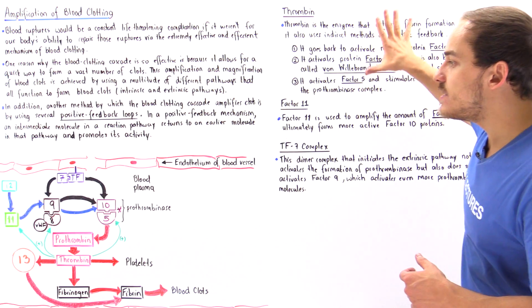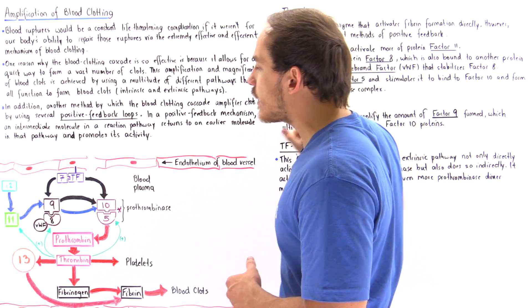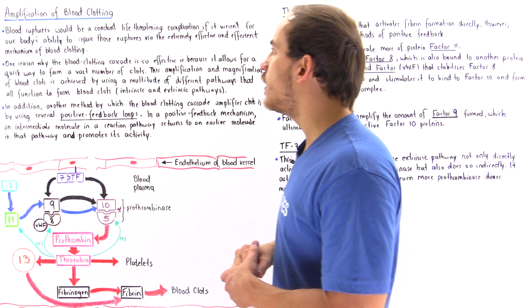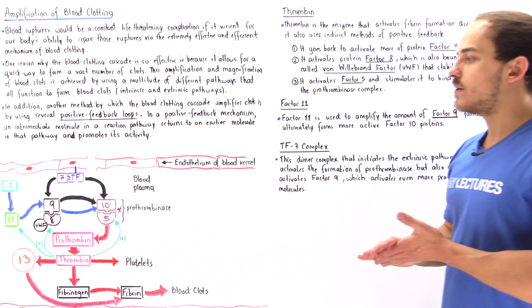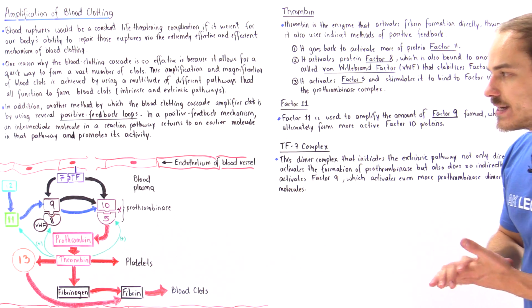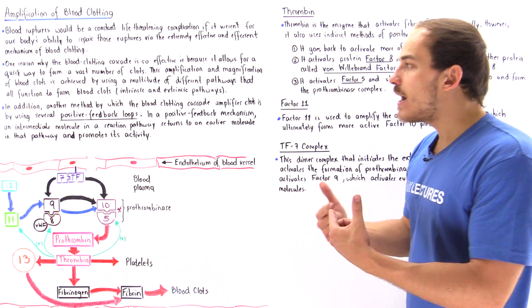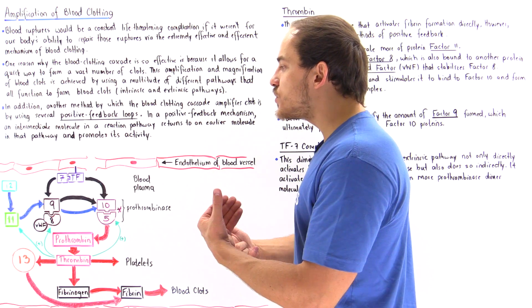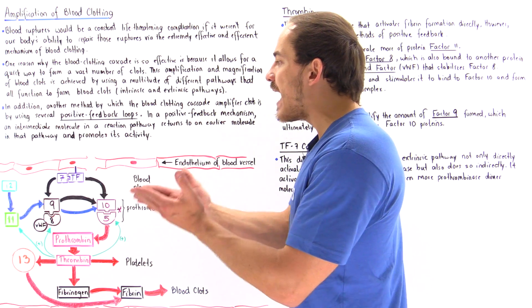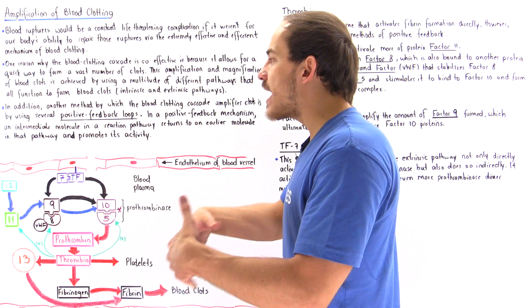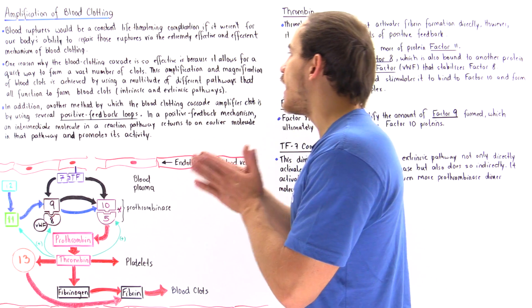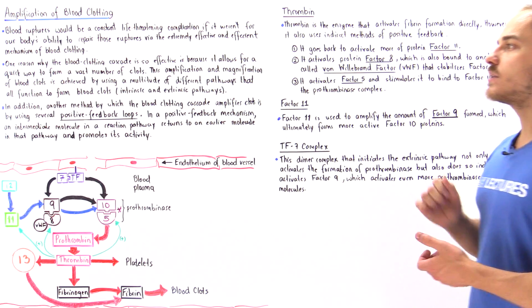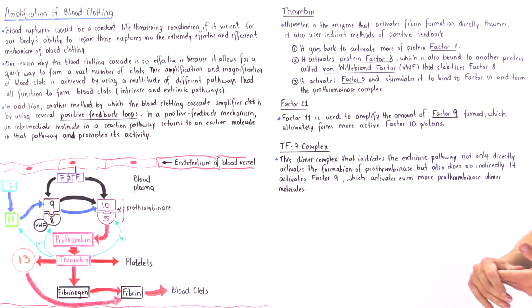These are the three positive feedback loops that you have to be familiar with during the process of blood clotting. On top of these positive feedback loops, we also have other pathways that essentially amplify and magnify the number of blood clots that we actually form.